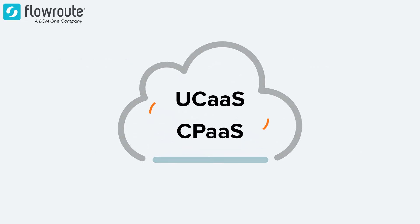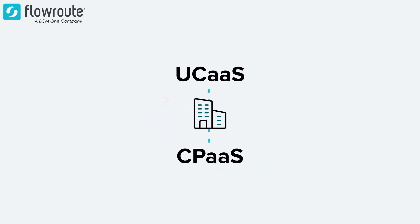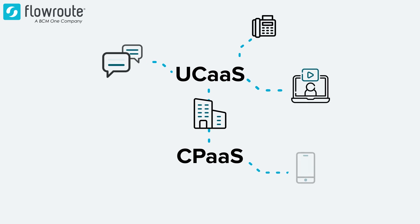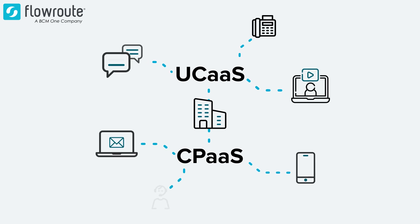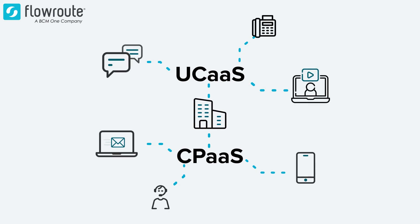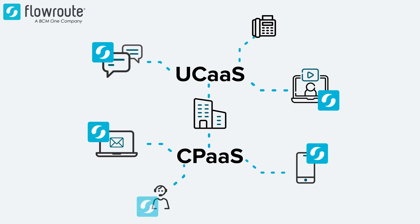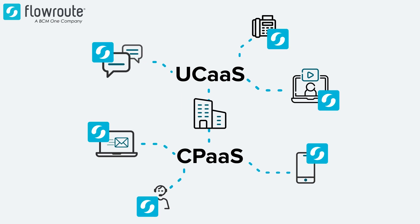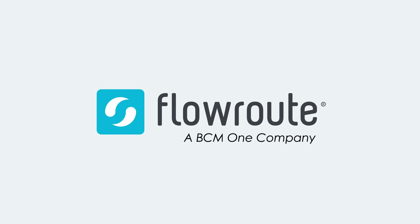Whether the UCaaS or CPaaS model works best for your business, FlowRoute and its quality telephony solutions can support it. FlowRoute can also help you determine which model is best for your business and communication needs. Visit us today to learn more.